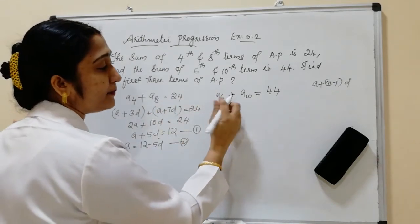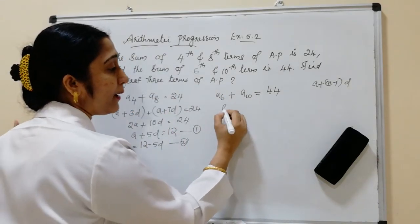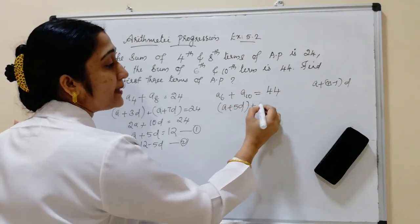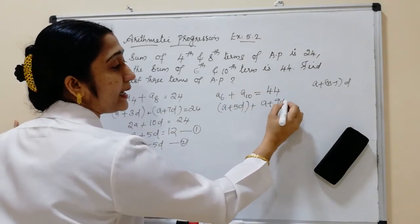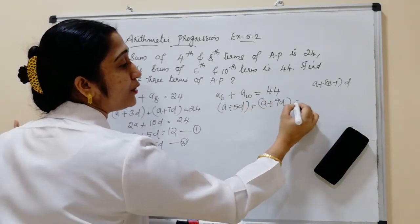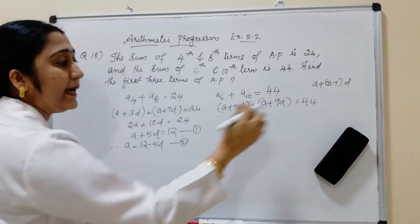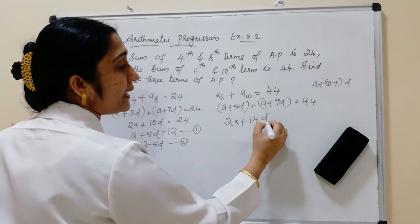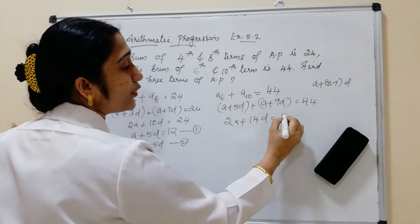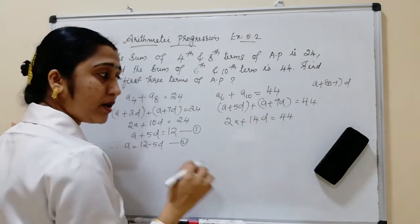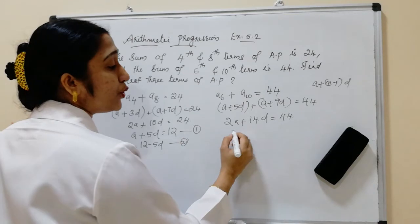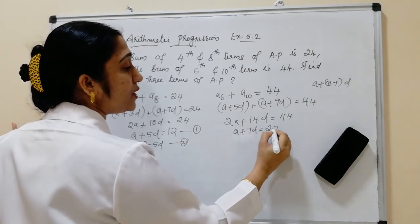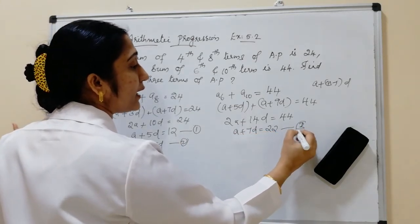For the second condition, A6 plus A10 means (A plus 5D) plus (A plus 9D) equals 44. Adding these gives 2A plus 14D equals 44. Dividing both sides by 2, we get A plus 7D equals 22. This is equation number 3.